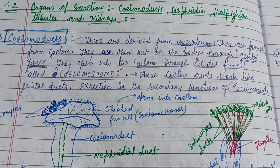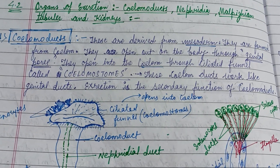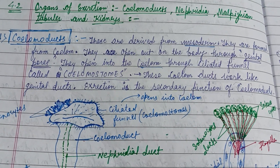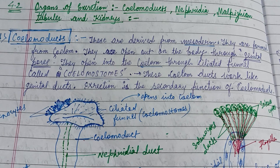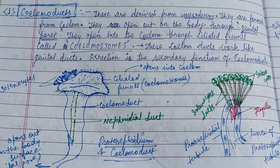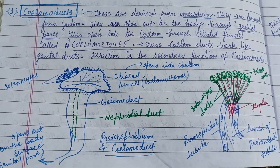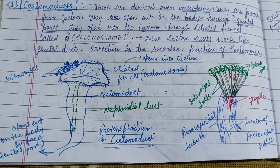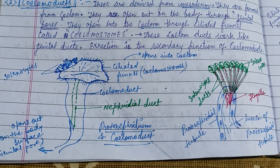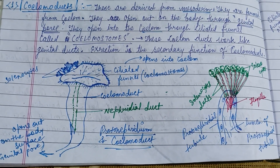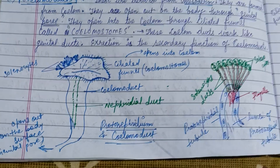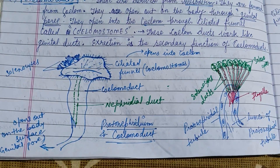Hi friends, here is another video which describes about the coelomoducts and in the next video we will discuss the next topic. Coelomoducts are derived from the mesoderm and they are formed from the coelom. They open out of the body through genital pores and they open into the coelom through the ciliated funnels called the coelomostome.